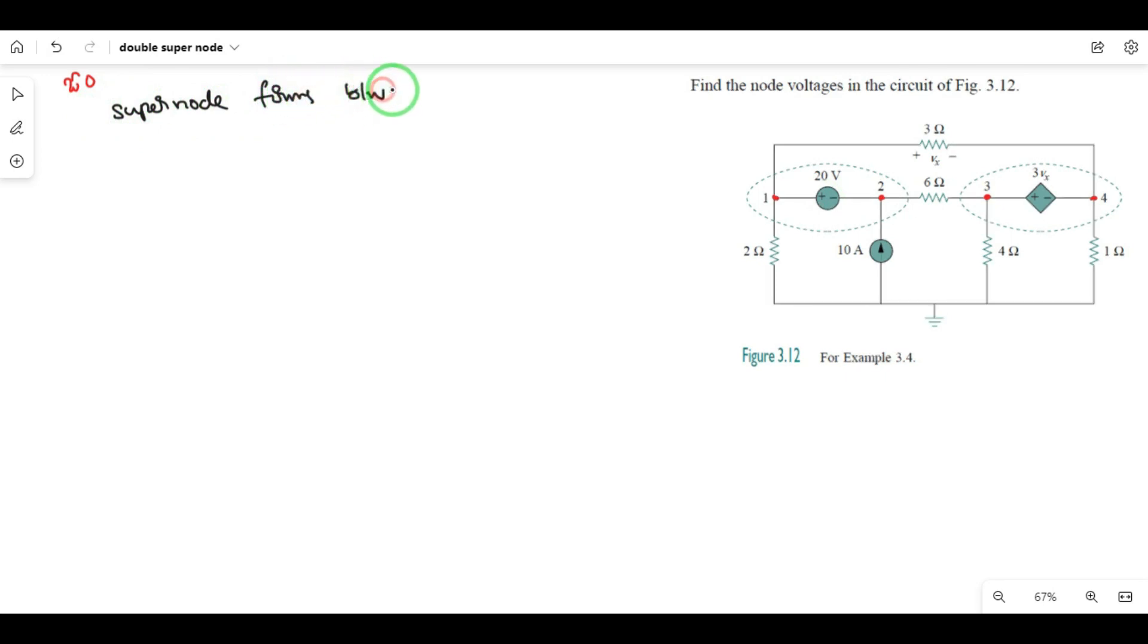So we get two super nodes. The first super node forms between node 1 and node 2. The super node equation is V1 minus V2 is equal to 20.